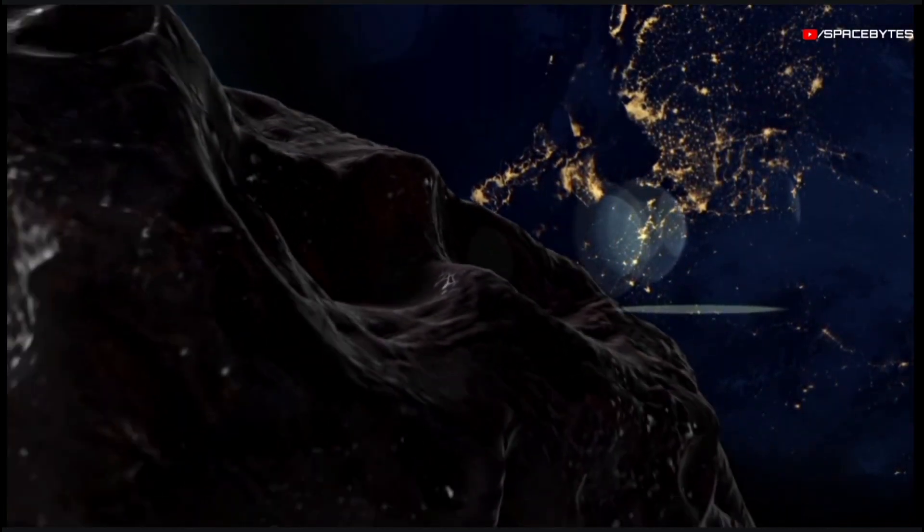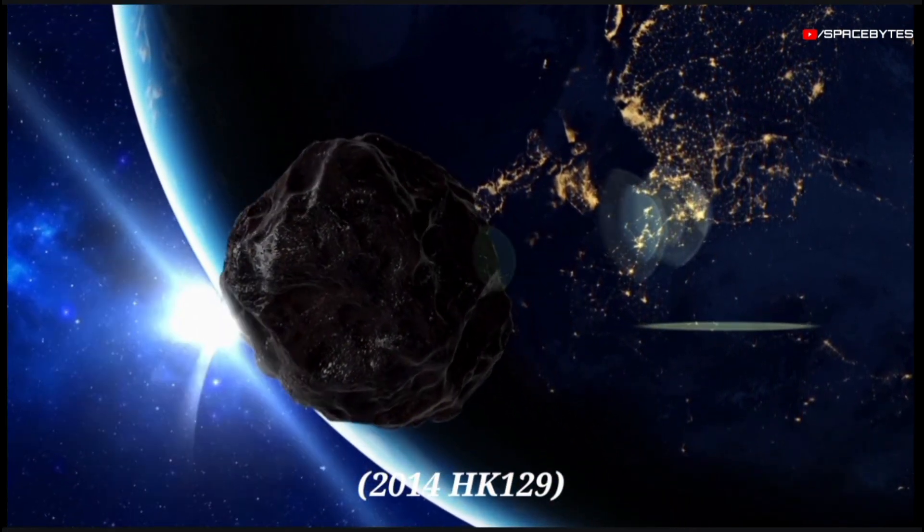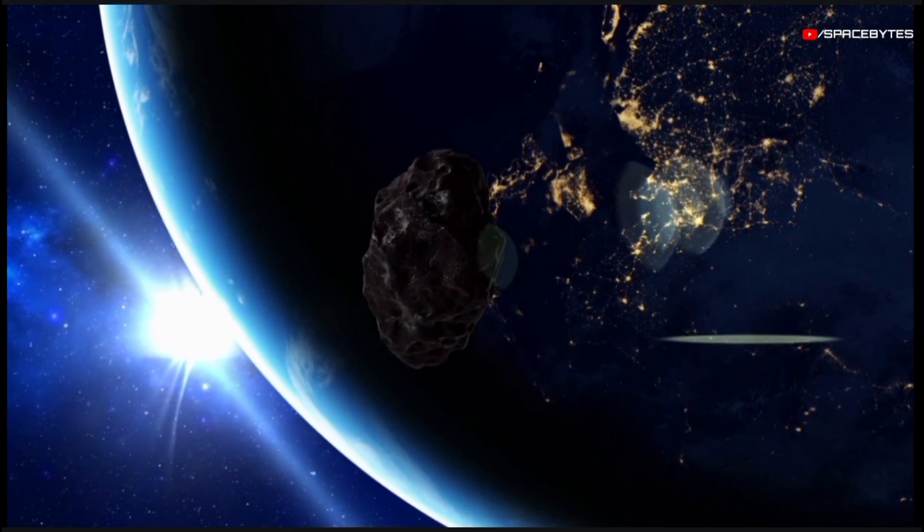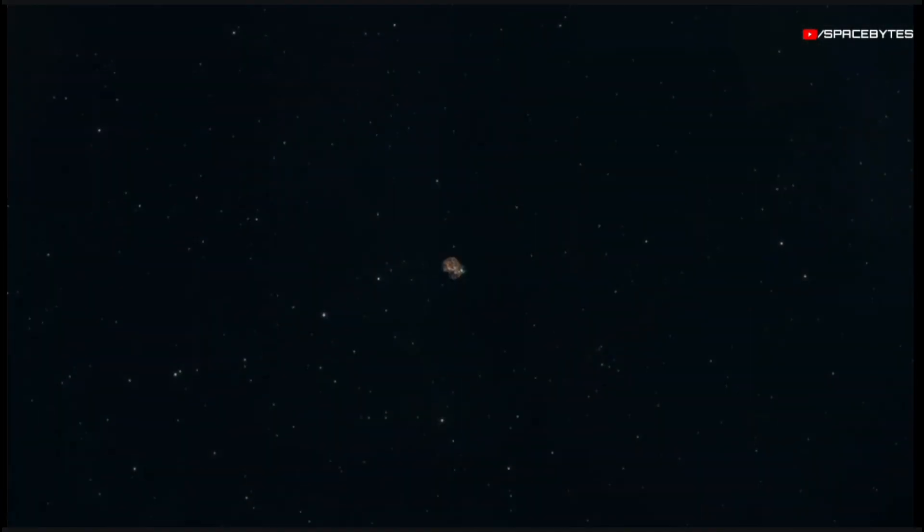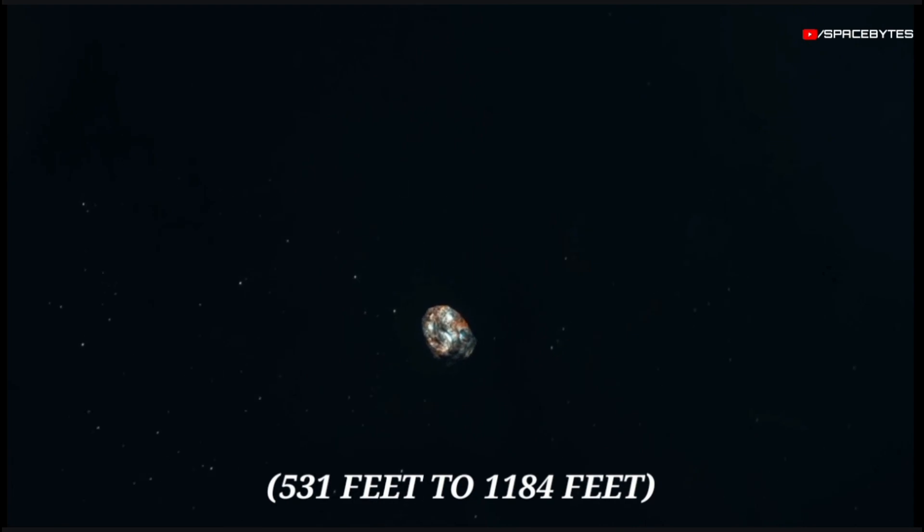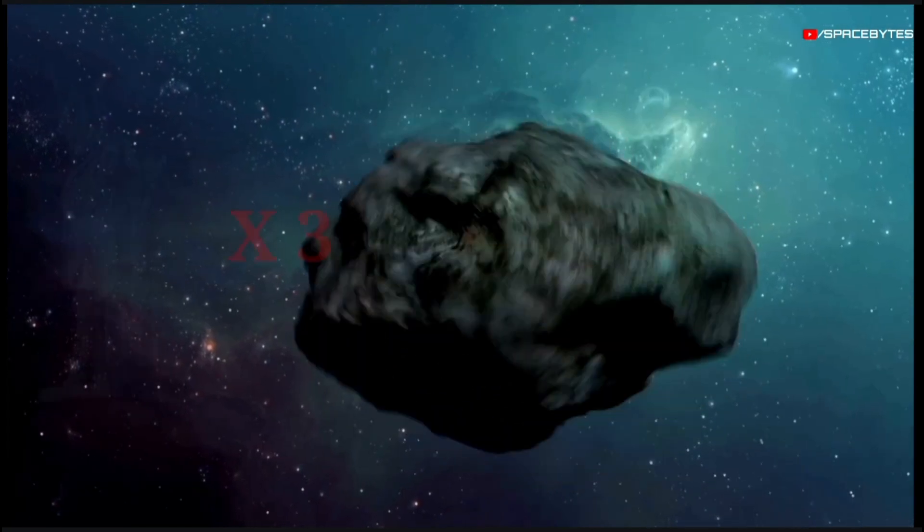Another huge asteroid to make a close approach is named 2014 HK129 and is scheduled to fly past our planet on December 20th, according to NASA's CNEOS. Its size is estimated in the range from 531 feet to 1,184 feet, which is thrice the size of the Statue of Liberty.